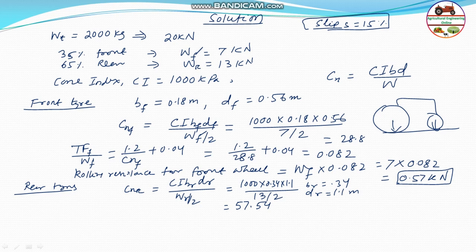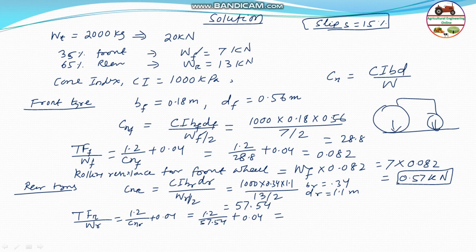Now for the rolling resistance of the rear wheel: TFR / WR = 1.2 / CNR + 0.04 = 1.2 / 57.54 + 0.04 = 0.061. So the rolling resistance coefficient for the rear wheel is 0.061. The total rear wheel rolling resistance TFR = 0.061 × 13 = 0.79 kN.